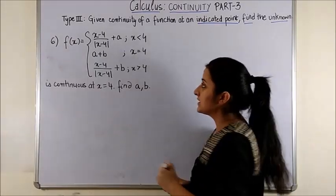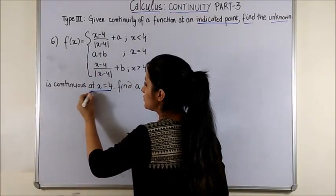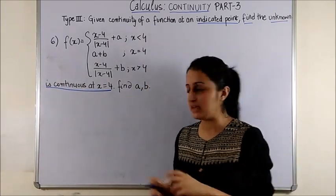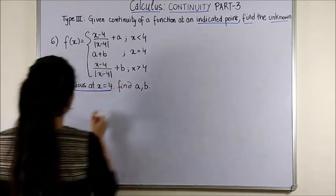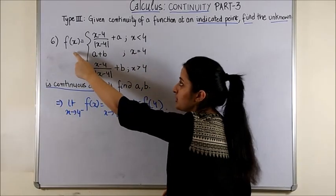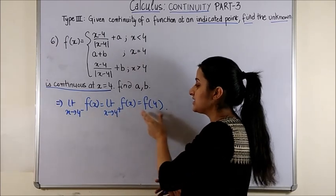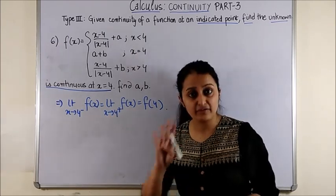Question 6. Once again you are given that fx is continuous at x equal to 4 and you have to find the unknowns a and b. So let's get started with this. Once again making use of fx is continuous at x equal to 4. You get LHL equal to RHL equal to value of the function at 4.